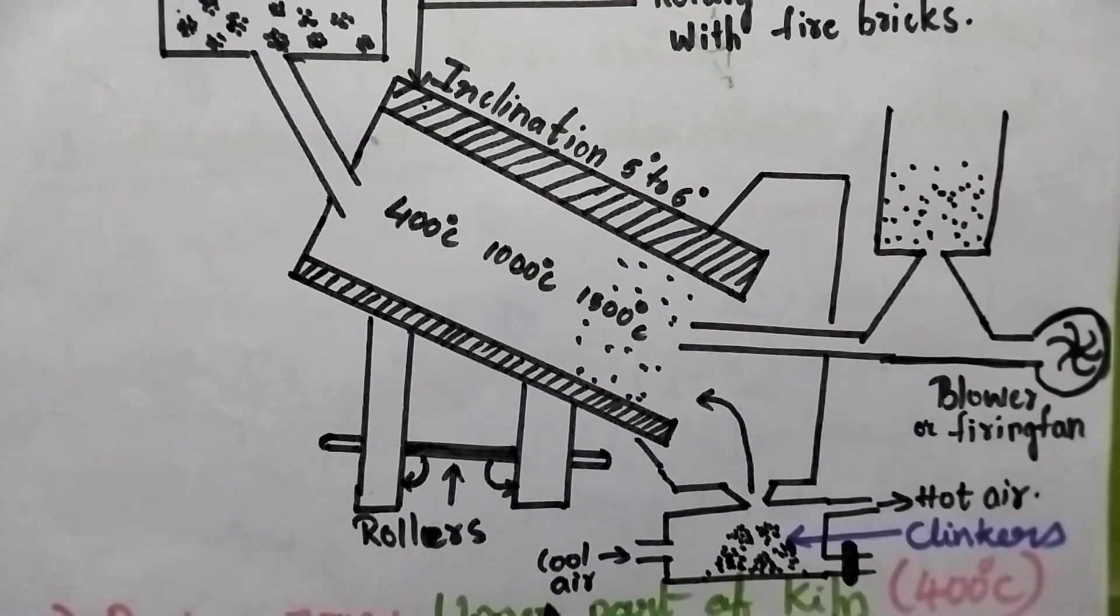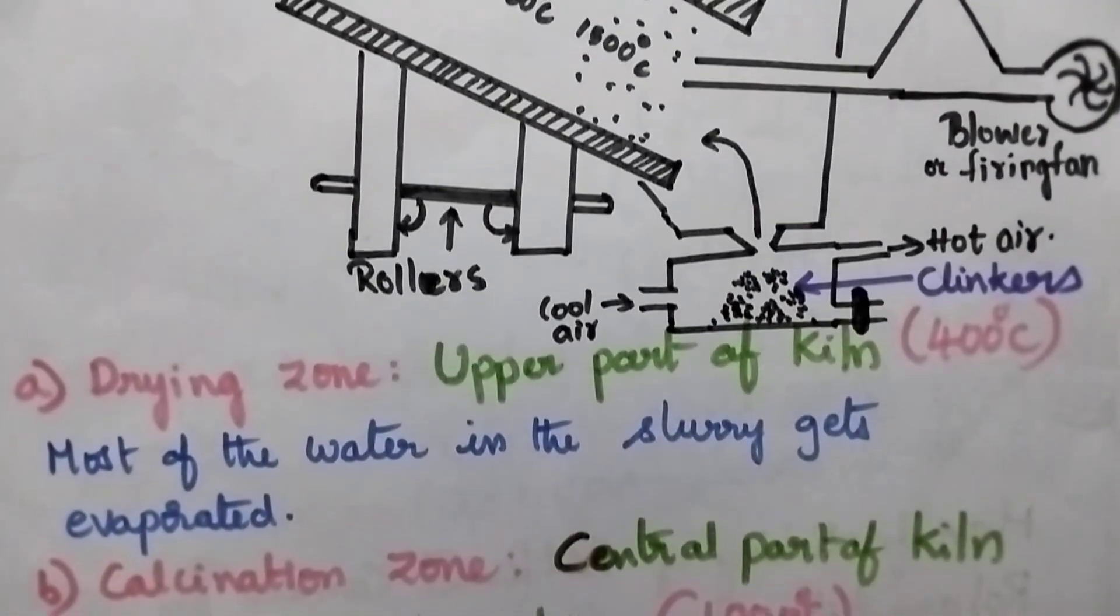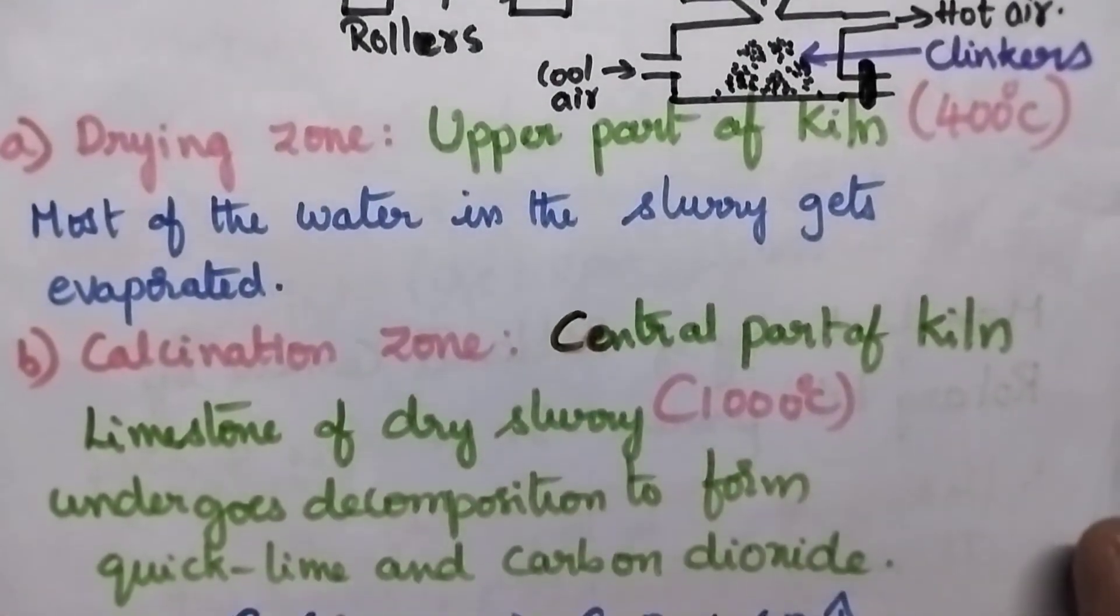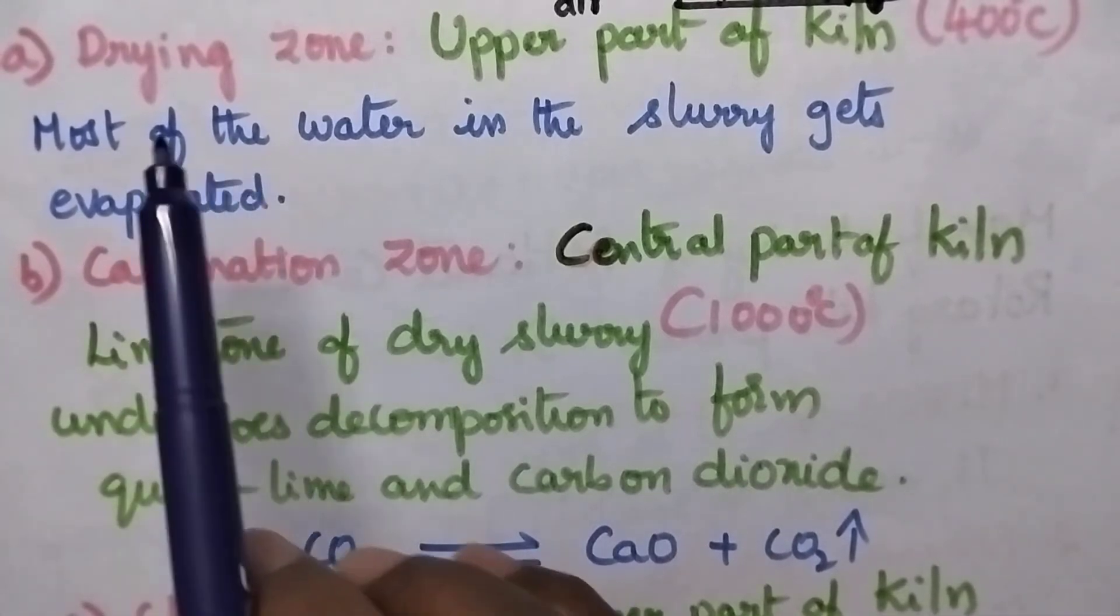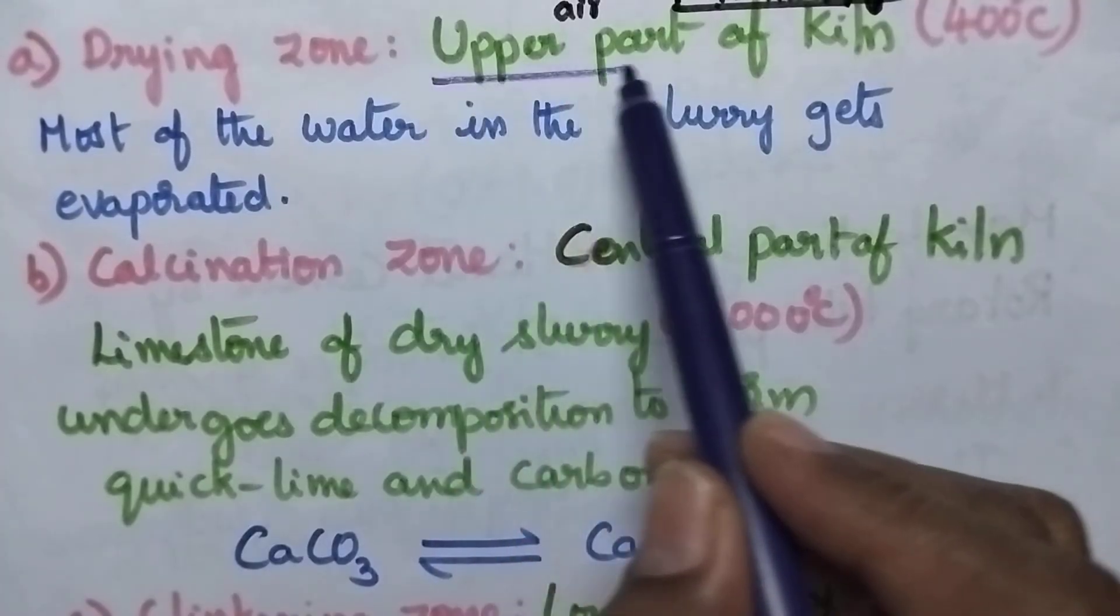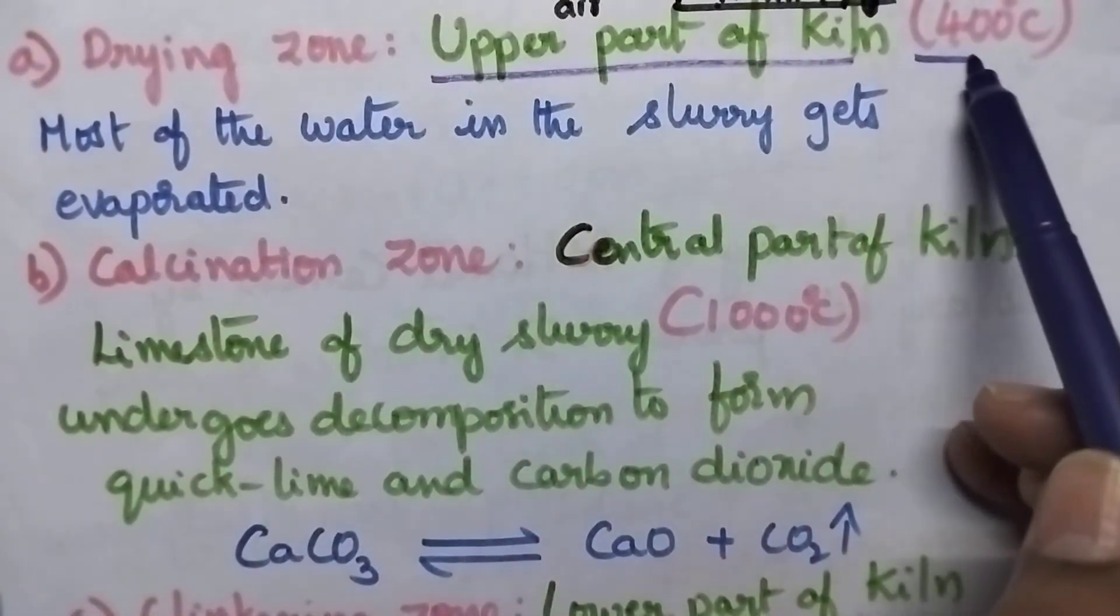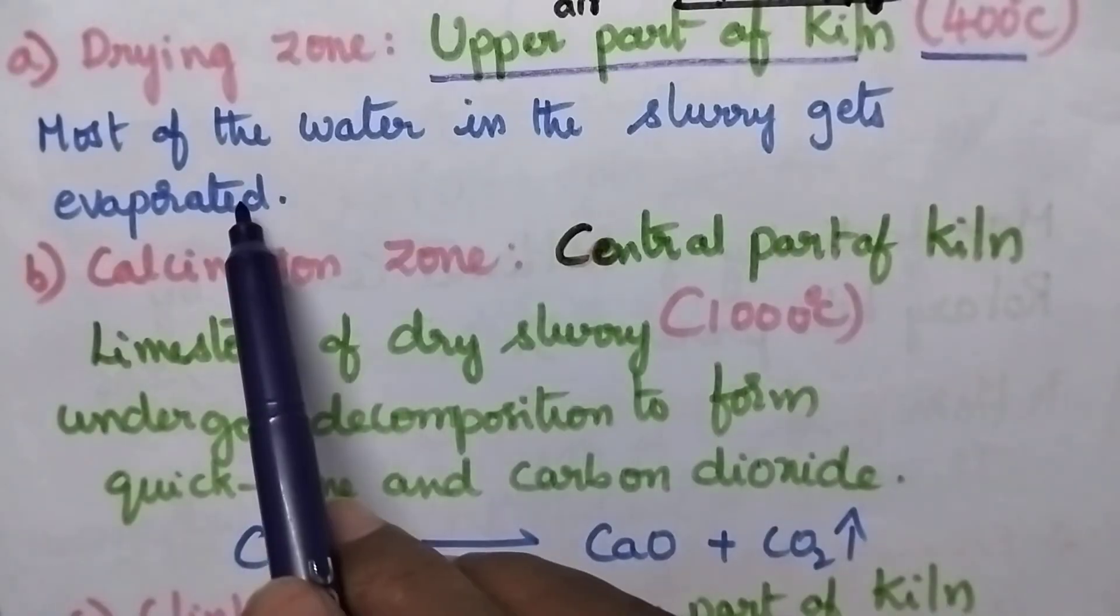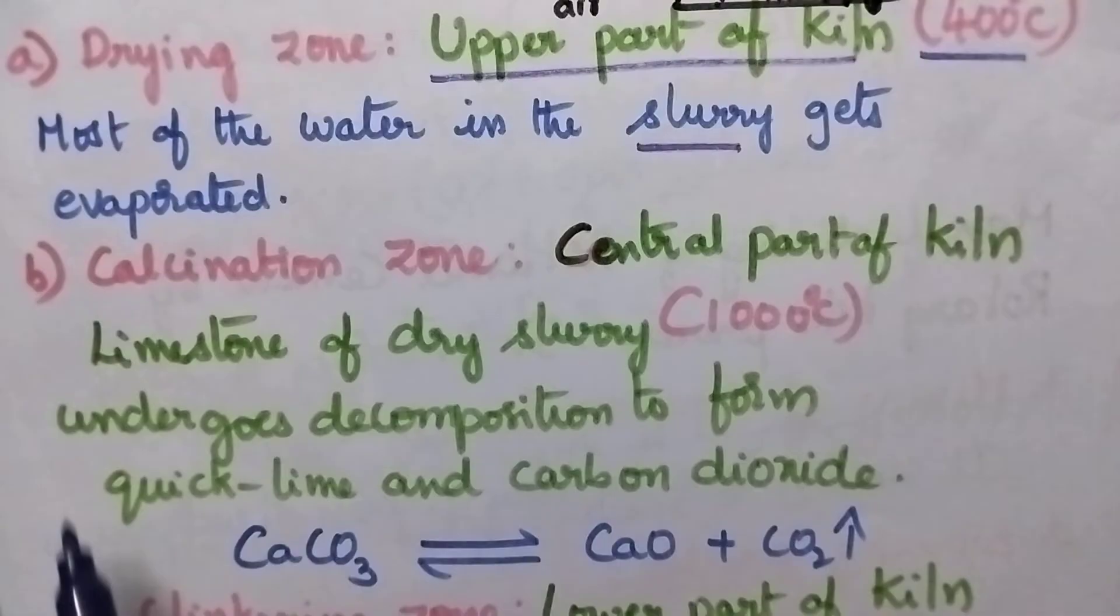With the help of Rotary Kiln process, it is possible to manufacture clinkers. Let us see what reactions are taking place in the Rotary Kiln. The Rotary Kiln is divided into three important zones. The first zone is the drying zone, the upper part of the kiln where 400 degrees centigrade is maintained. Here most of the water from the slurry will be evaporated.